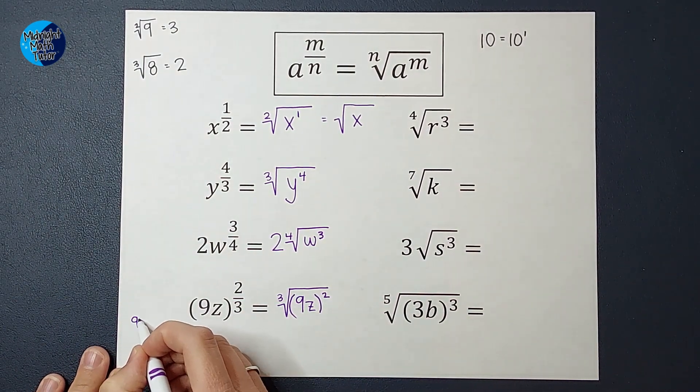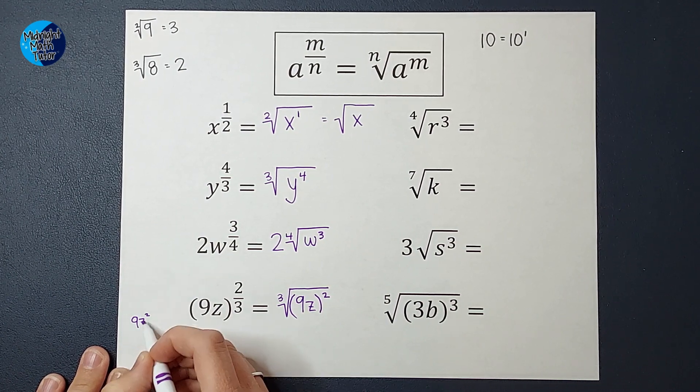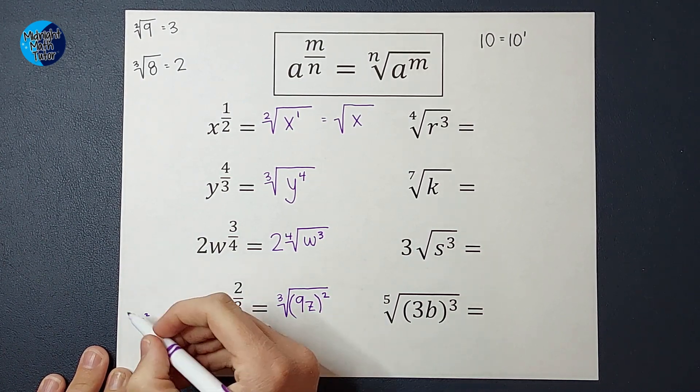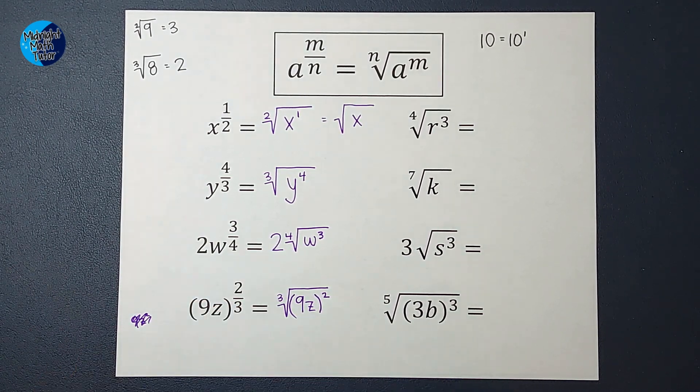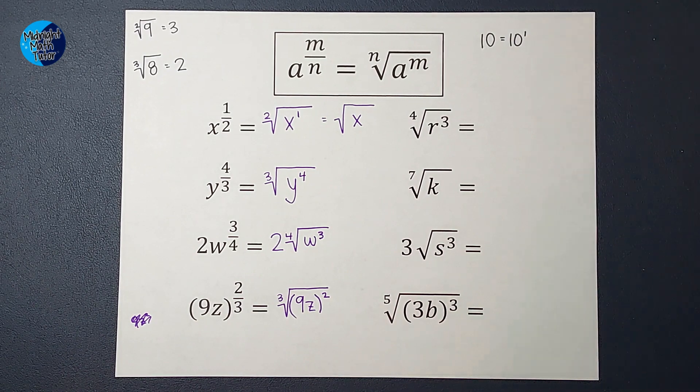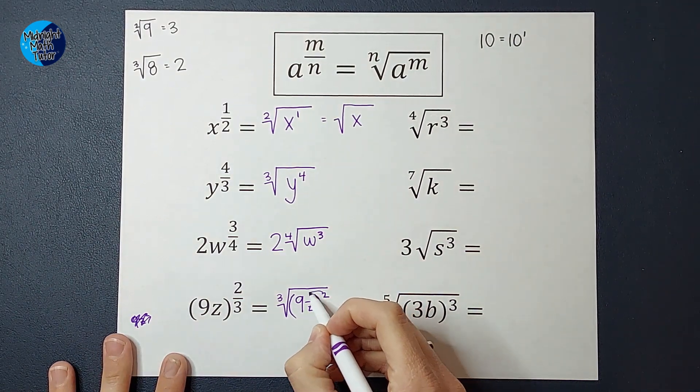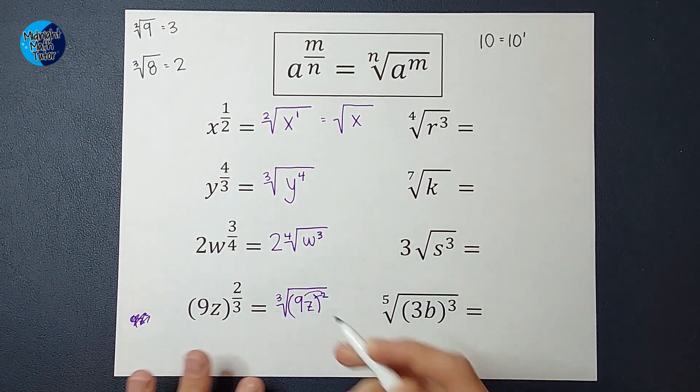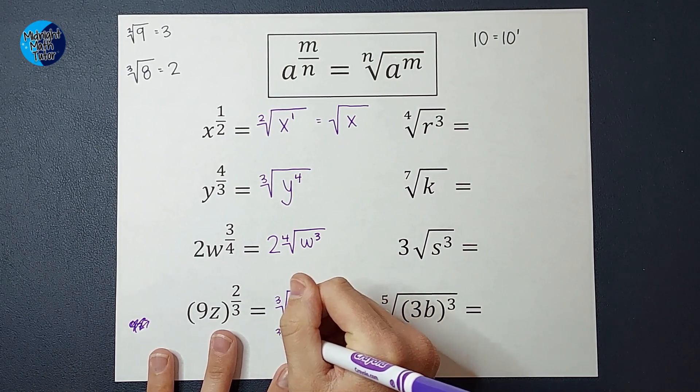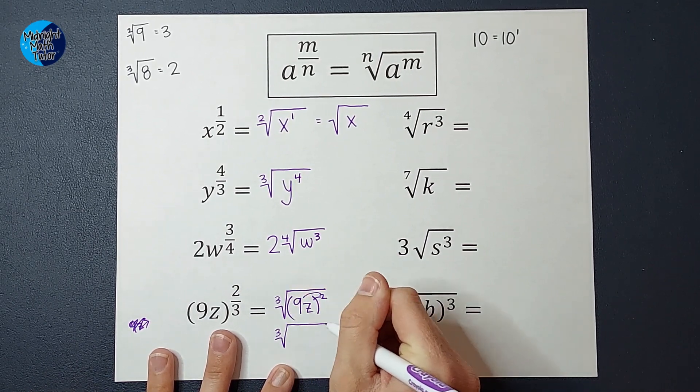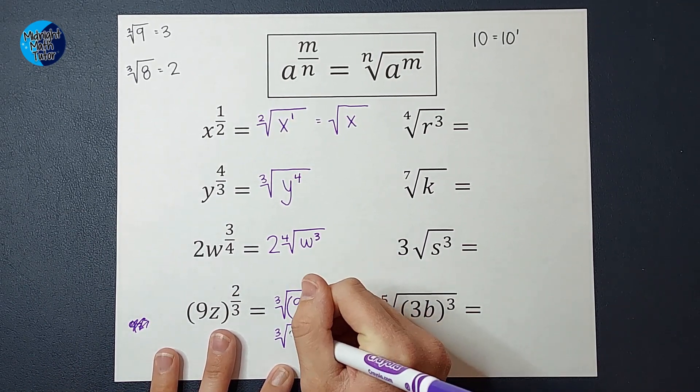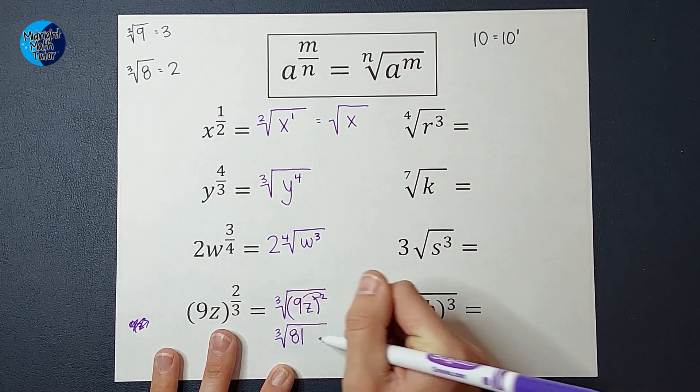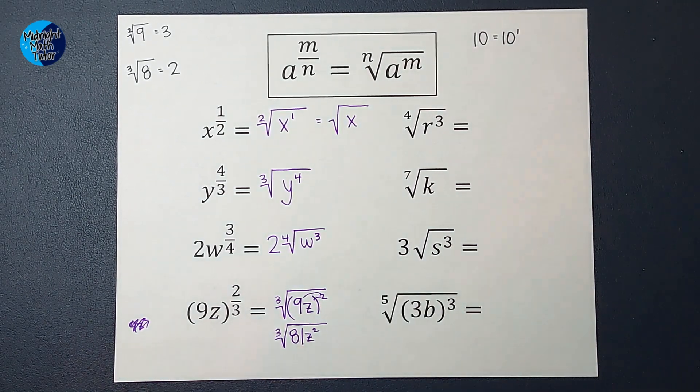If I were just to write 9z squared, the squared would only go to the z. So that's why I put those parentheses. Now this could be your answer, or if your teacher wants you to simplify it even more, the squared goes to both the 9 and the z, so we could also write this as the cubed root of 9 squared, which is 81, and then we have the z squared. Hopefully that made sense.